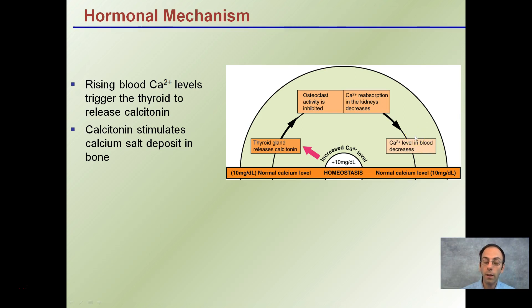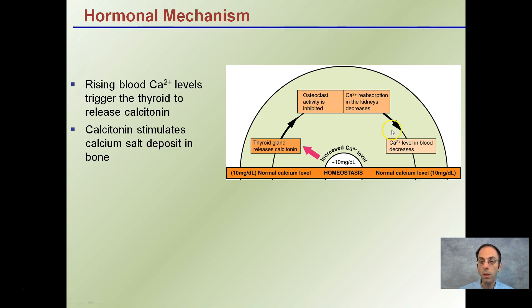There are two ways of regulating calcium levels. One is a hormonal mechanism: raising blood calcium levels triggers the thyroid to release calcitonin. Think of calcitonin as putting calcium in — it stimulates calcium salt deposits in bone, meaning calcium levels are being brought into the bone and reduced at the circulatory system level, returning to normal. So: normal level → increase → release calcitonin → calcium deposited into bone → blood calcium decreases back to normal.